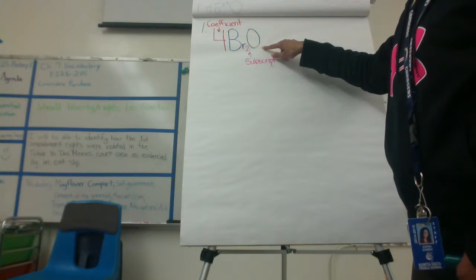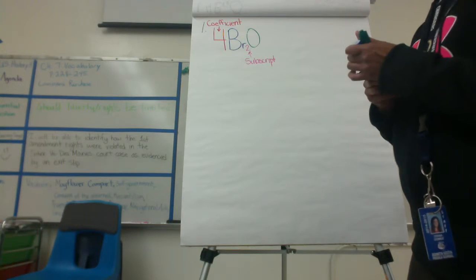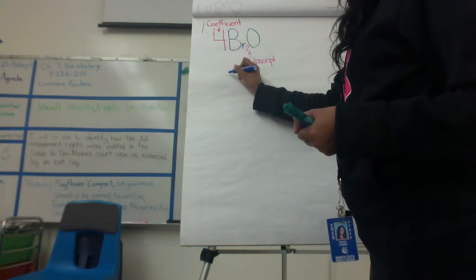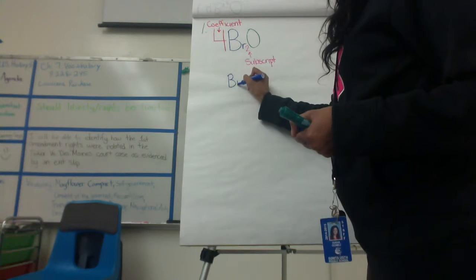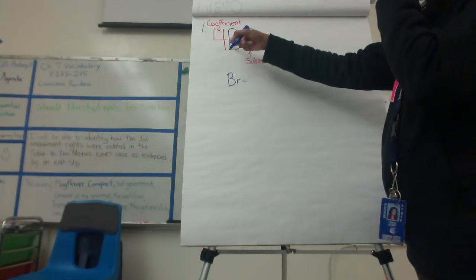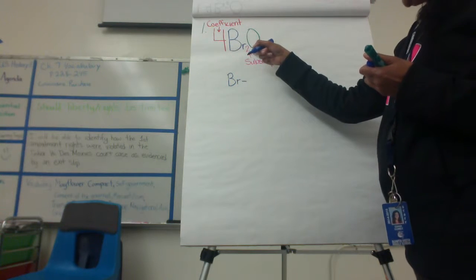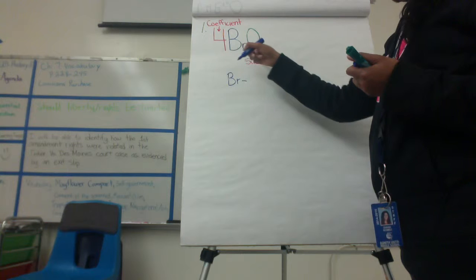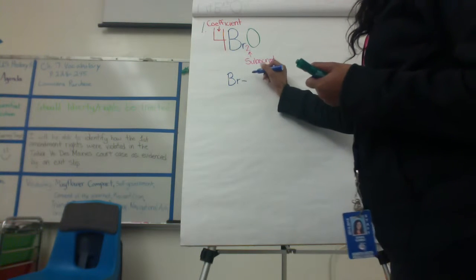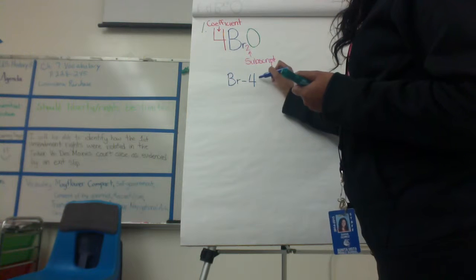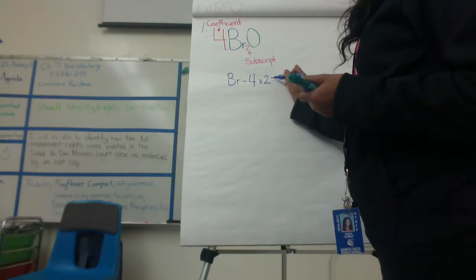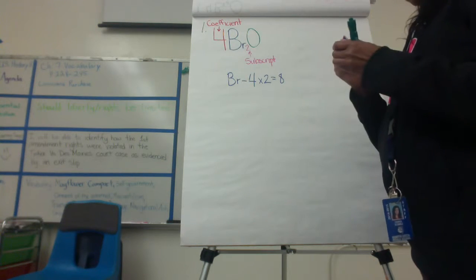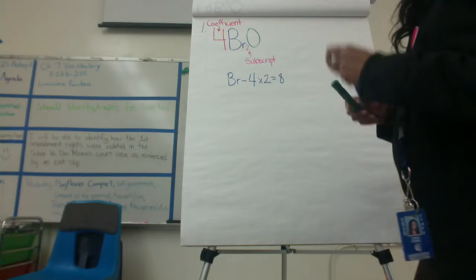Oxygen, on the other hand, does not have a subscript. So when you have Br, or bromine, you're supposed to identify how many bromines there are in this formula. The way you do it is you take the coefficient and multiply it by the subscript. In this case it is 4 × 2, which gives me 8 — so there are eight bromines in this compound.